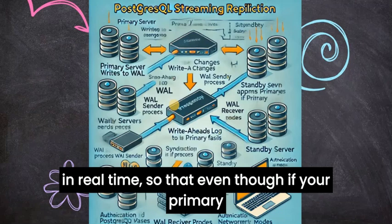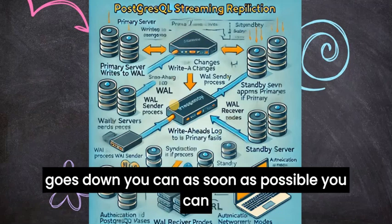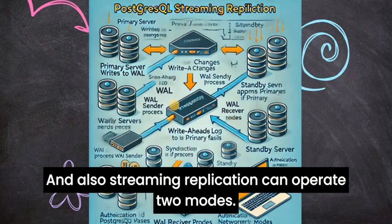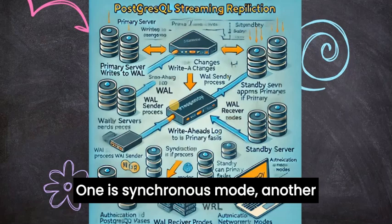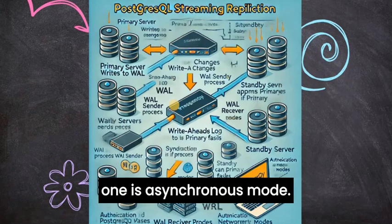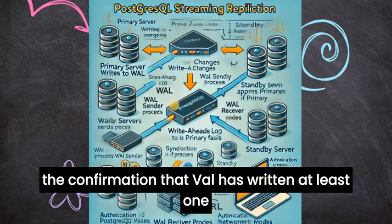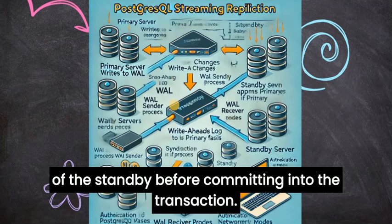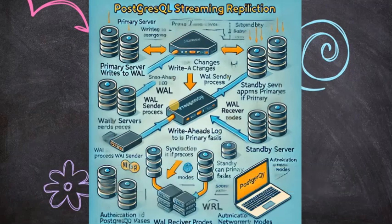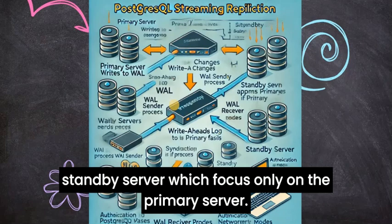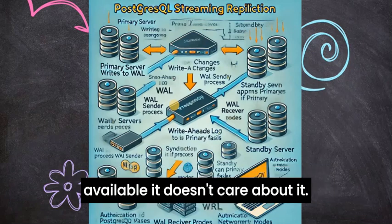So even if your primary goes down, you can bring up your standby as a primary as soon as possible. Streaming replication can operate in two modes: synchronous mode and asynchronous mode. In synchronous mode, the primary waits for confirmation that the WAL has been written to at least one standby before committing the transaction. In asynchronous mode, which is the default, the primary doesn't expect any confirmation from the standby — it focuses only on the primary server. So even if the standby is not available, it doesn't care about it.